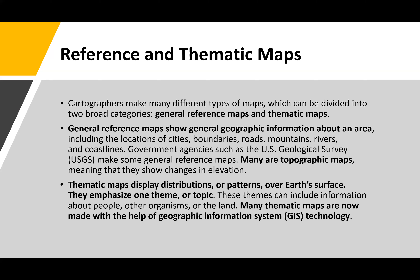For thematic maps, they display distributions or patterns over Earth's surface. This is also one of the key components of a GIS — this idea of being able to layer information on top of each other in order to distinguish distributions or patterns. Typically they emphasize one theme or topic at a time, though it's not limited to that.